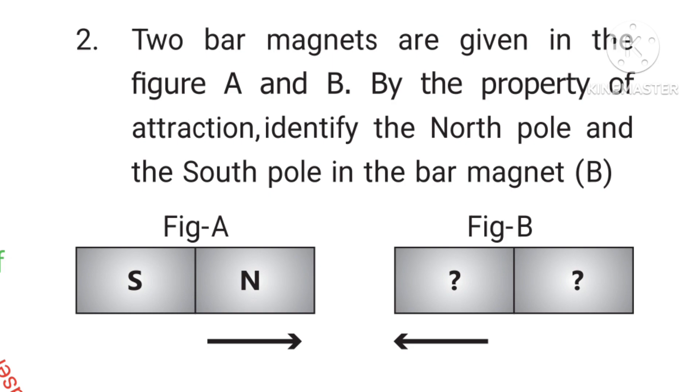Third question: Two bar magnets are given in figure A and B. By the property of attraction, identify the north pole and the south pole in the bar magnet B. Answer is so simple. Unlike poles attract. So figure B: first column, south. Second column, north.